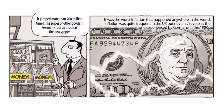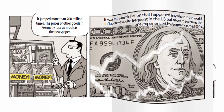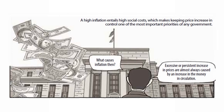Inflation was quite frequent in the United States but never as severe as the one experienced by Germany in the 1920s. A high inflation entails high social costs, which makes keeping price increases in control one of the most important priorities of any government. What causes inflation then?